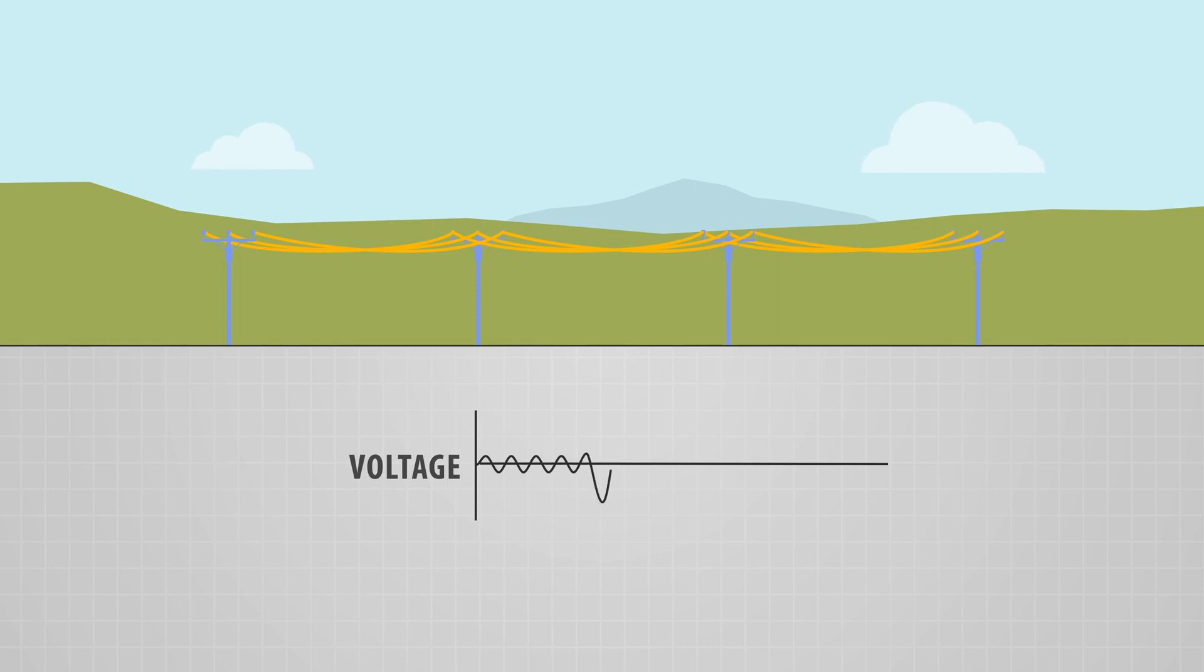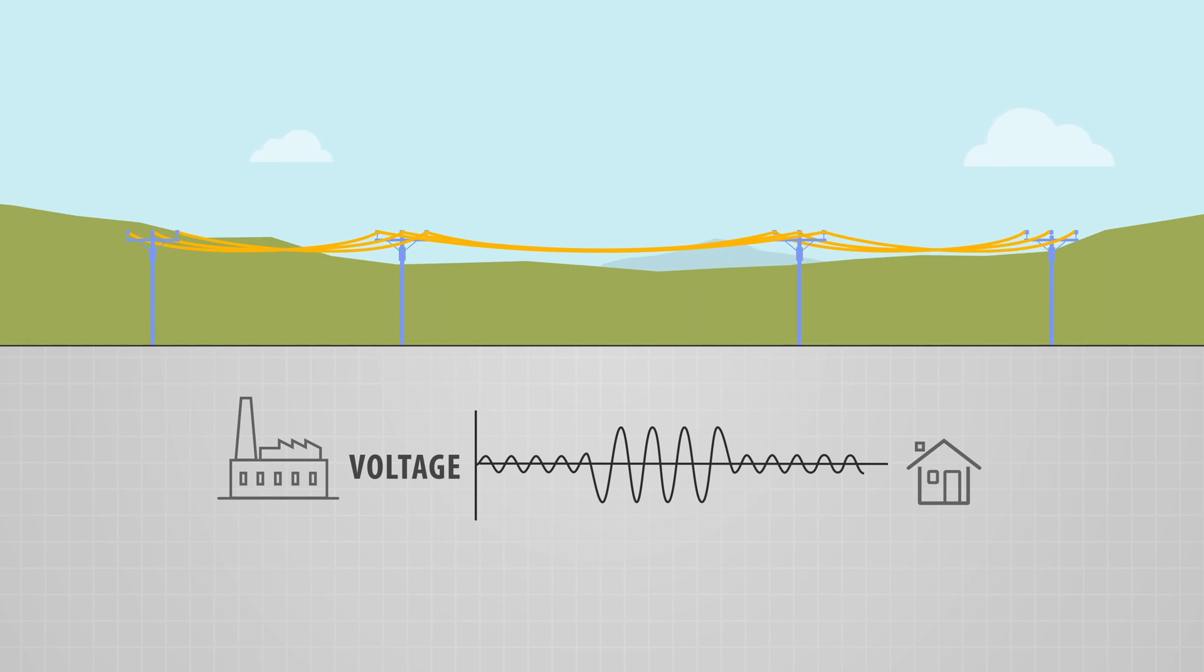With alternating current, it's easier to increase, step up, and decrease, step down, voltage between where it is generated and where it is consumed. This enables the system to carry large amounts of power over long distances more efficiently.